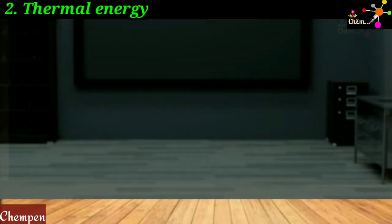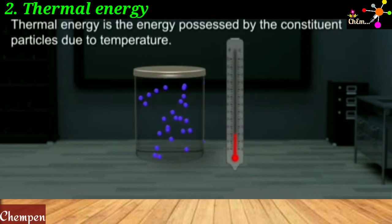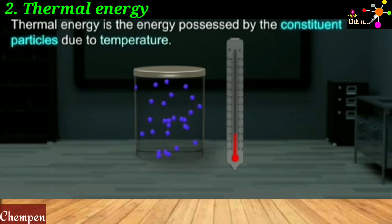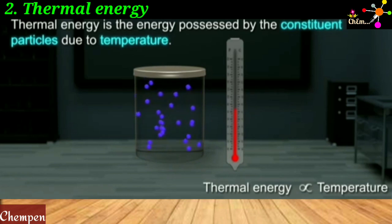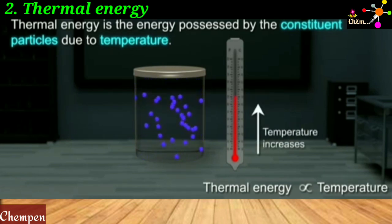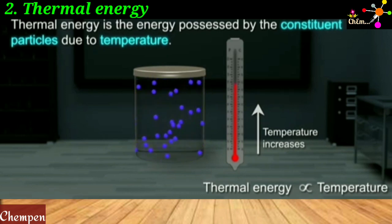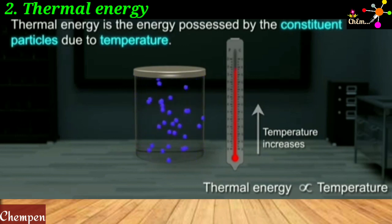The second factor is thermal energy. This is the energy possessed by the constituent particles due to temperature, and it varies with temperature. With the rise in temperature, the constituent particles possess more and more energy — they have higher thermal energy. This energy tends to keep the constituent particles apart as it makes them move faster.